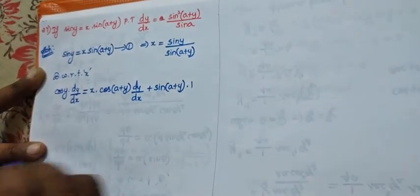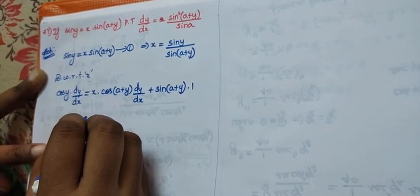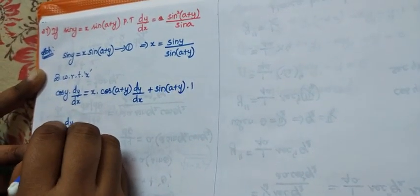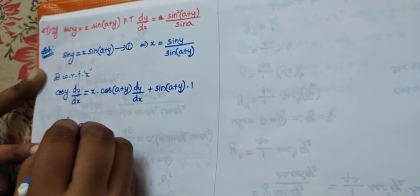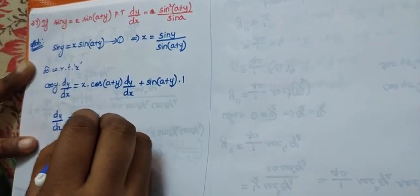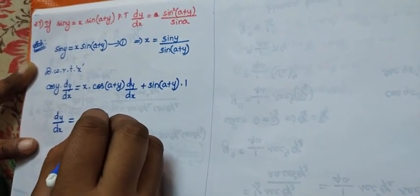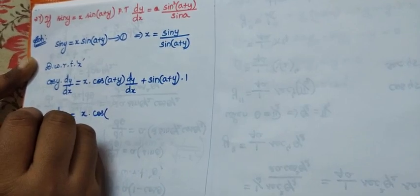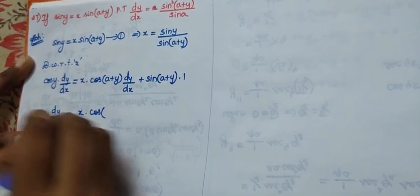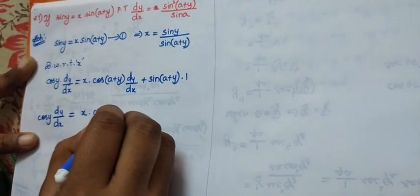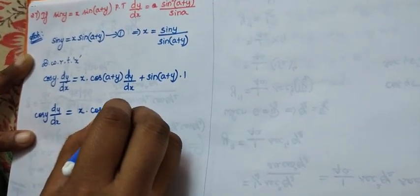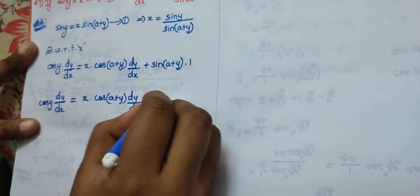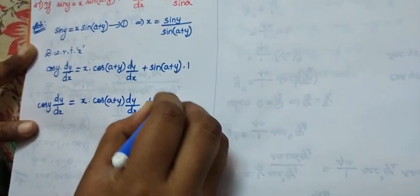The differentiation of x is 1. So it is equal to: cos y · dy/dx equals x·cos(a+y)·dy/dx plus sin(a+y).